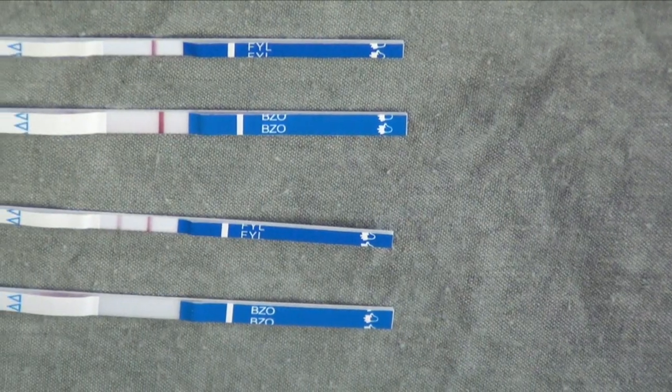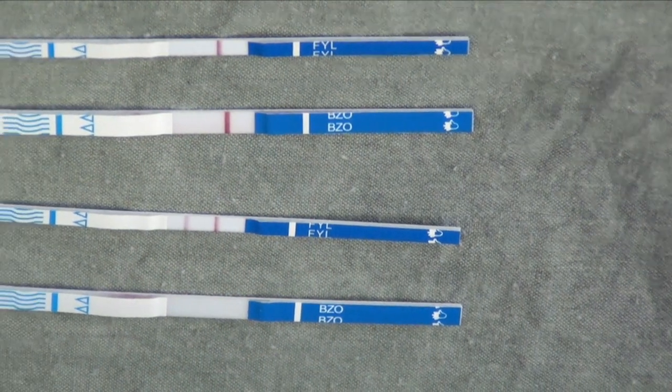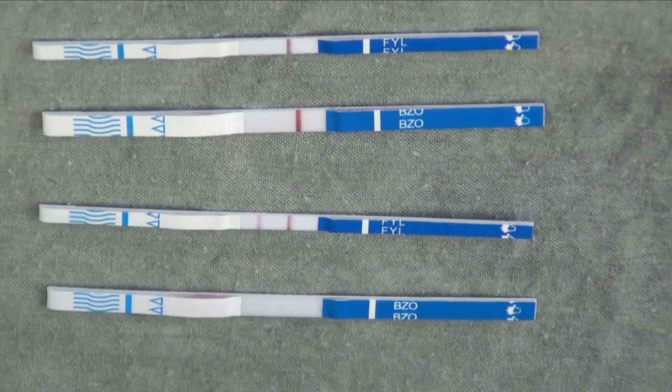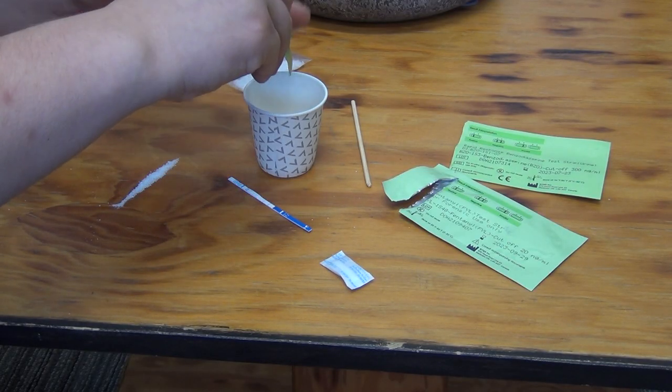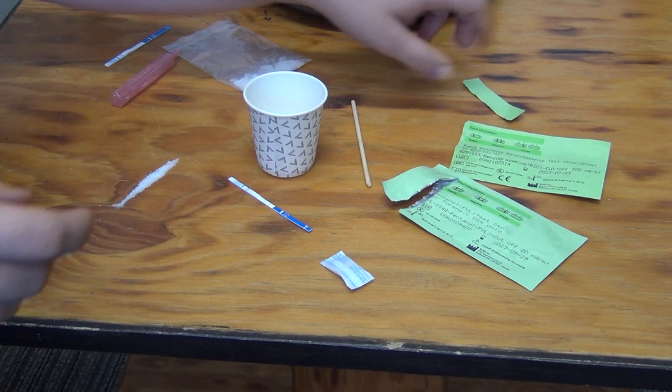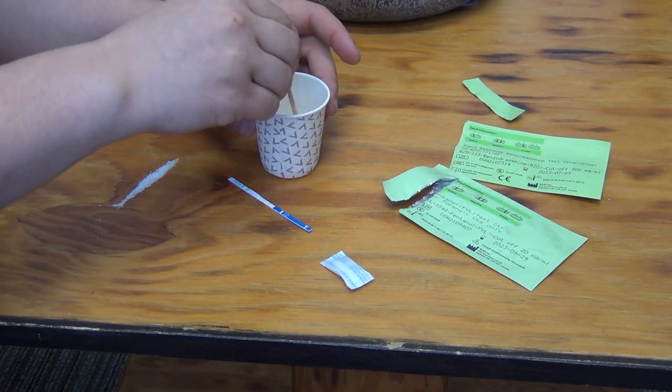If no lines are visible, as seen here on the benzo strip on the bottom, or only one line is present on the same side as the blue squiggly lines, your test is considered to be invalid. You will have to get a new strip and test again as the strip you've used may be defective.